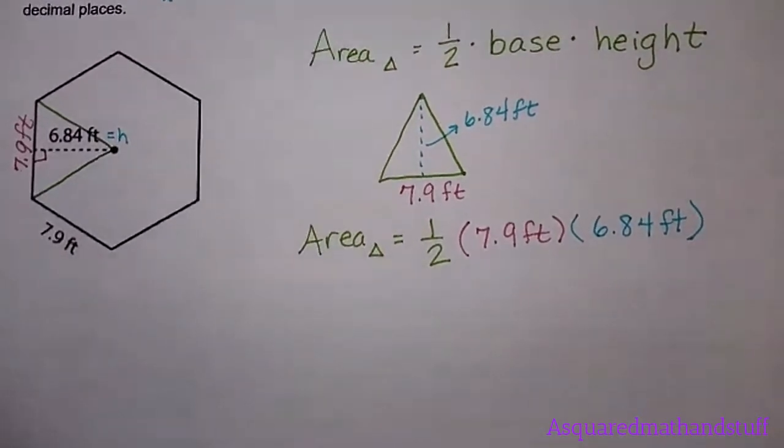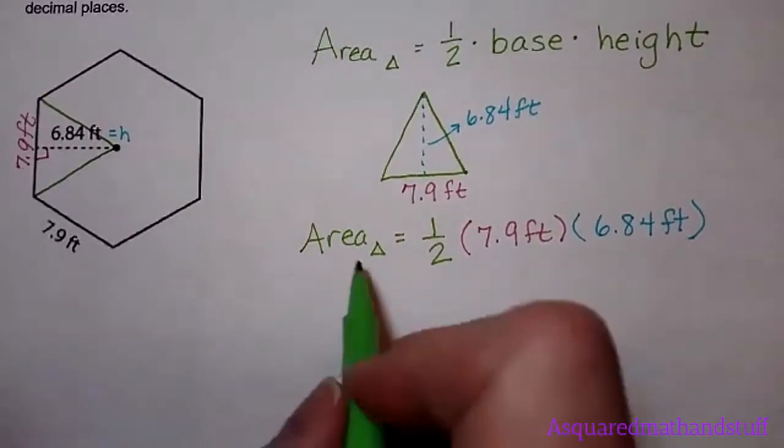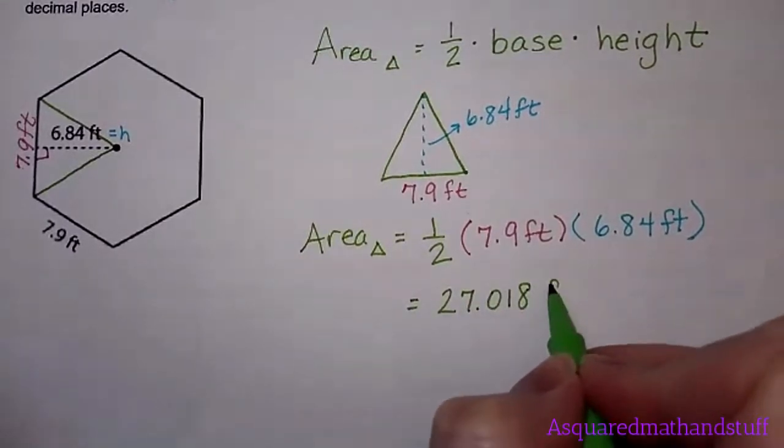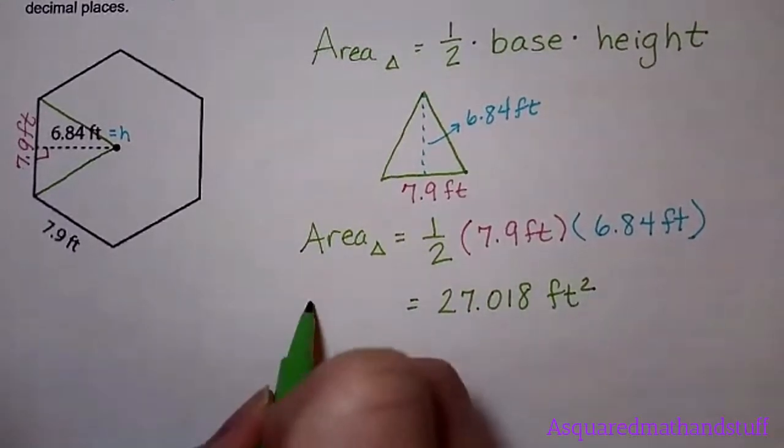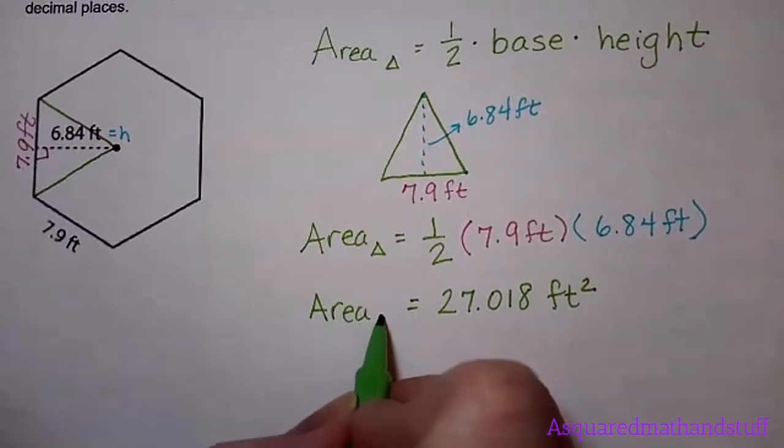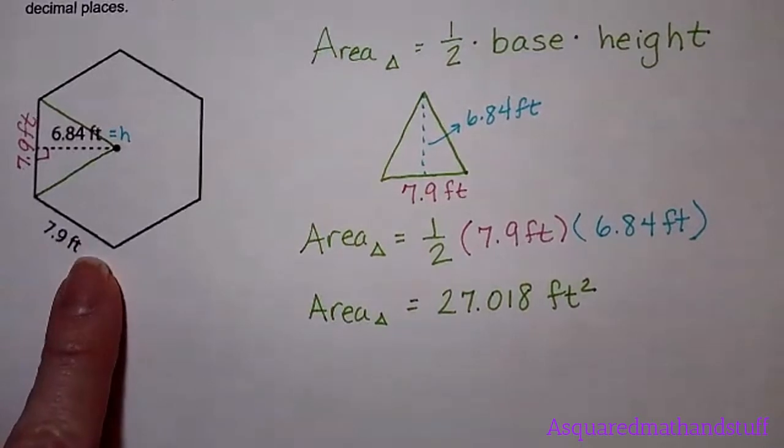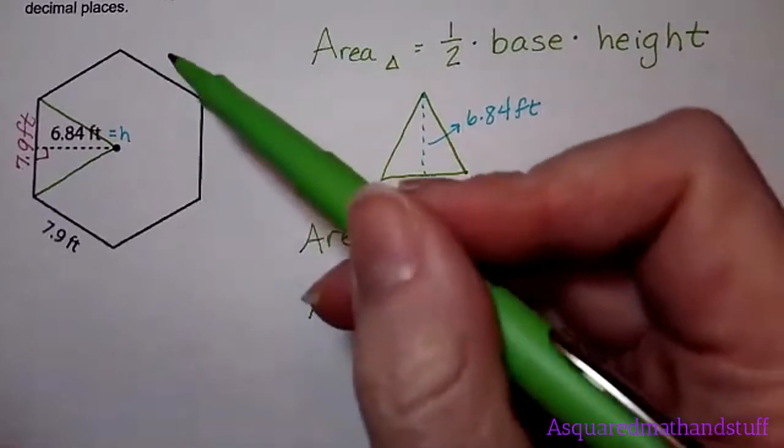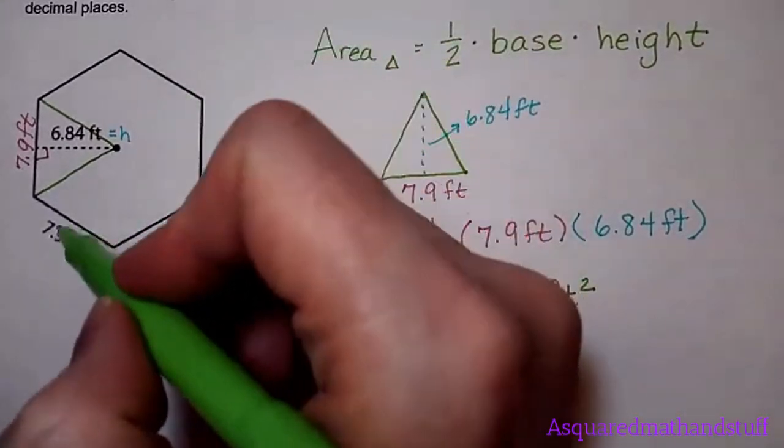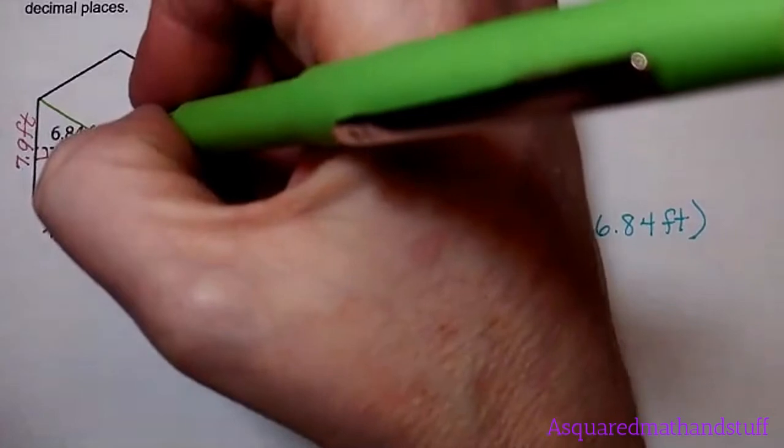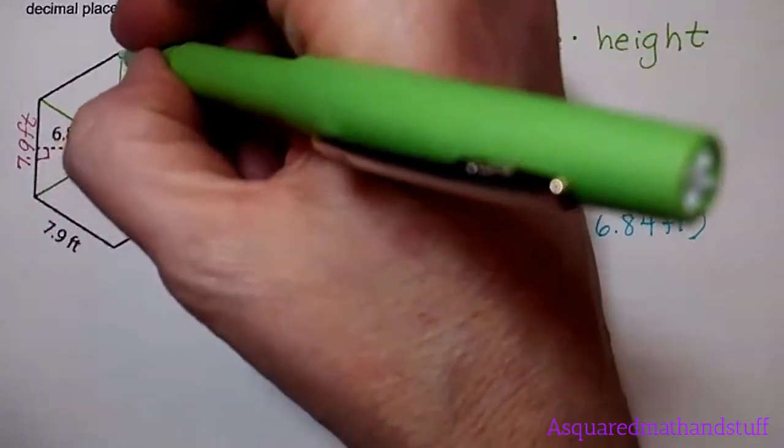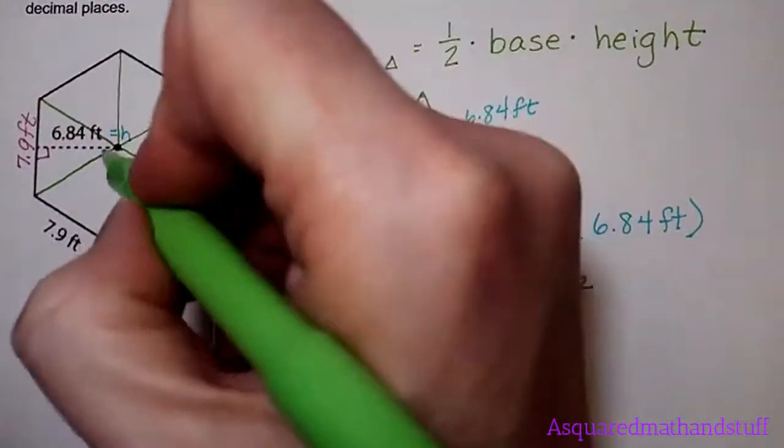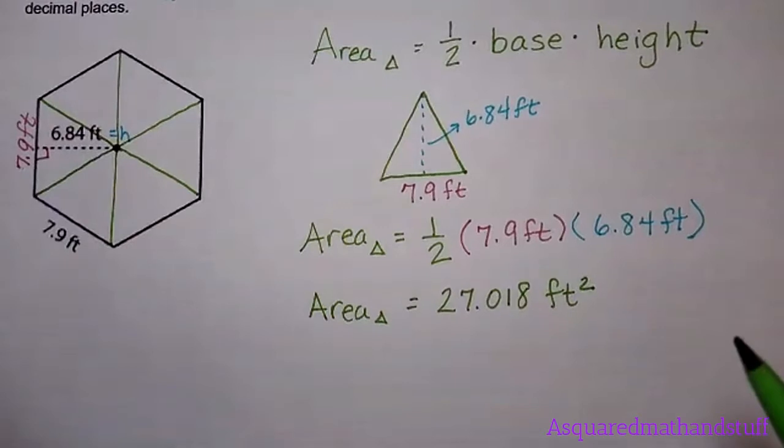So that's the area of just one triangle. This shape though is made up of multiple triangles, and this shape is actually made up of the same number of triangles as there are sides. So this is a six-sided figure or a hexagon, and if we were to create triangles that come from the center and extend out to each vertex, we would have six triangles in there.